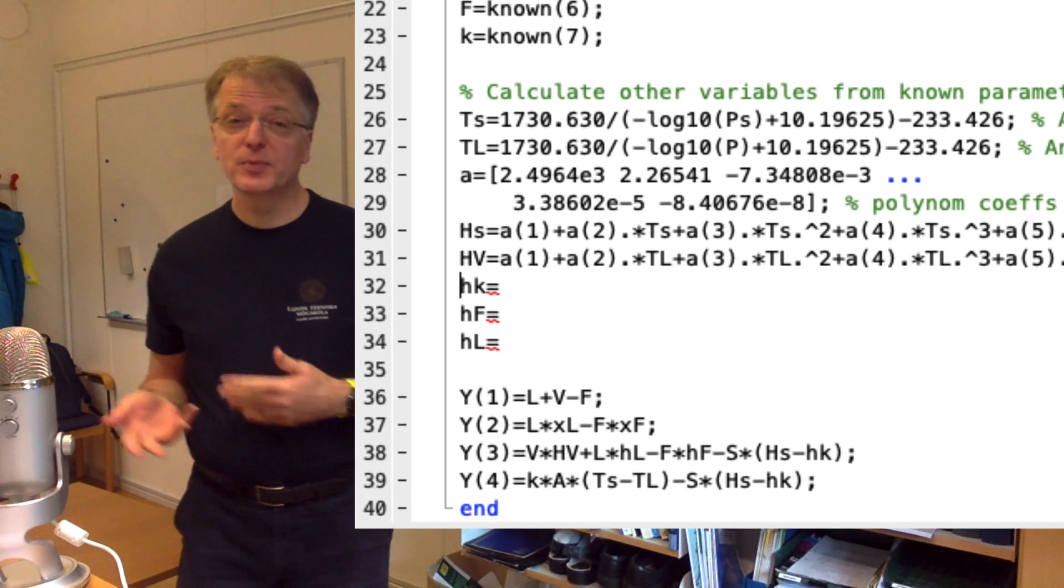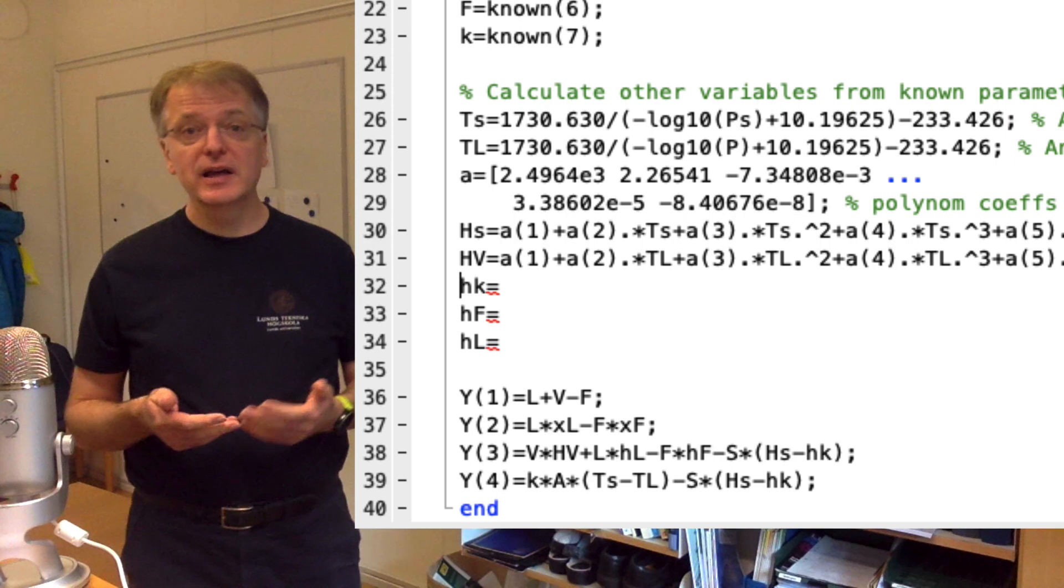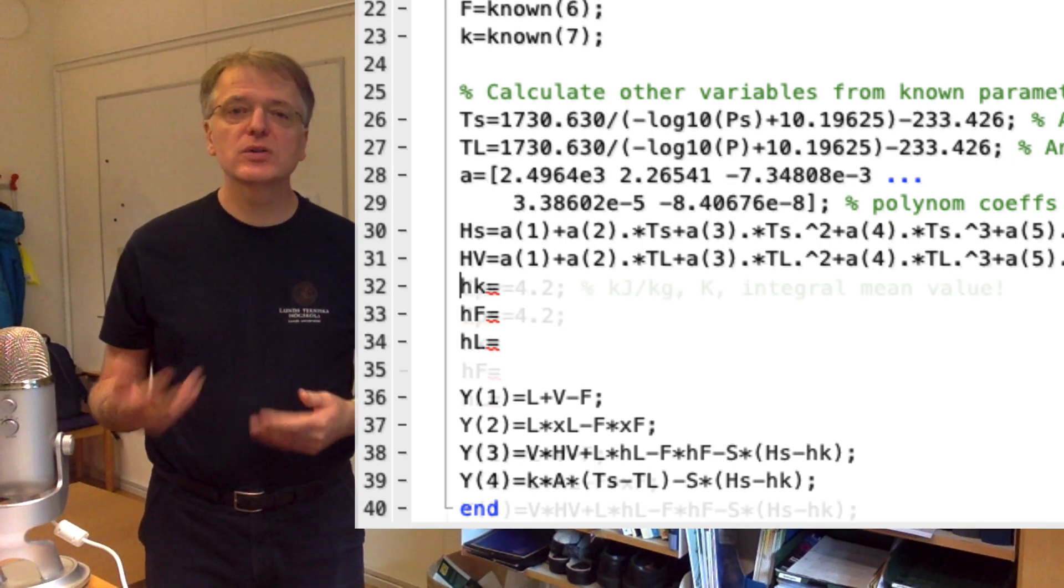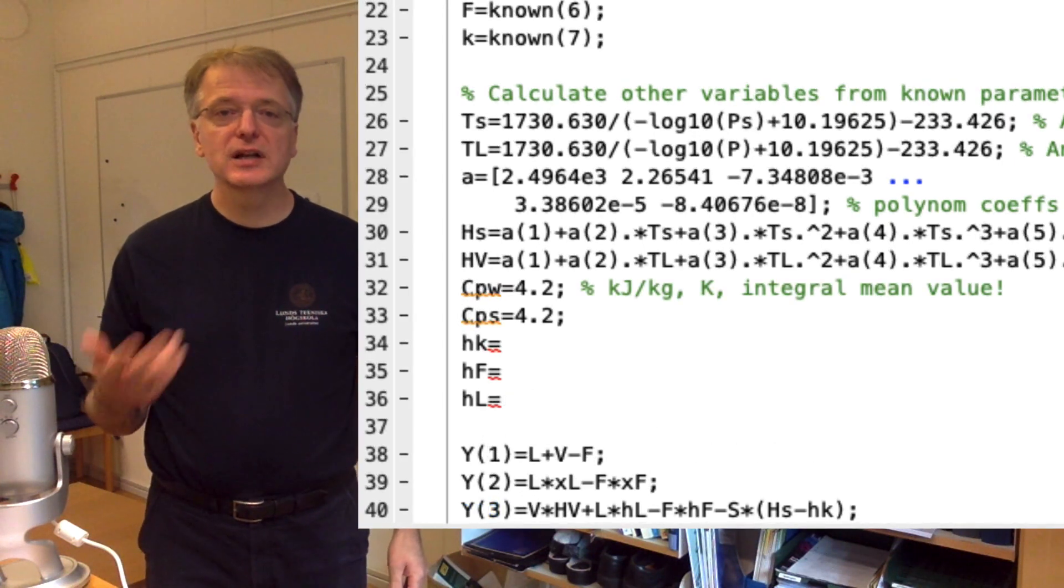To calculate the enthalpy of the condensate, the feed F and the liquid L, let us simplify and use a constant heat capacity for water and gelatine respectively.